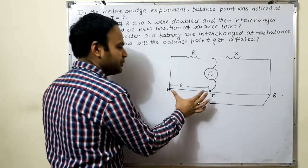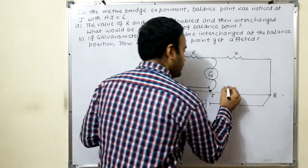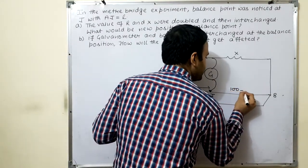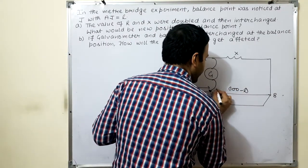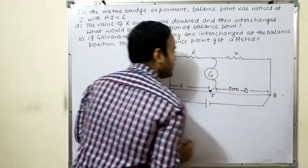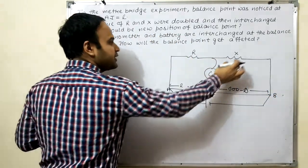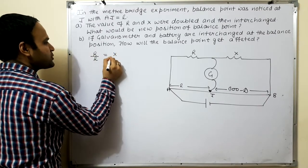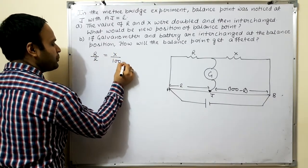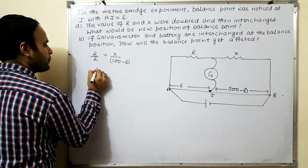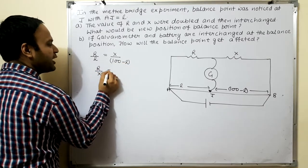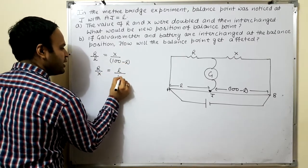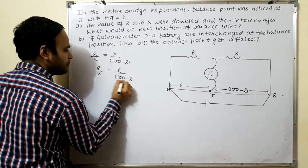If you see, this is 100 cm. First, if L is L, then this remains 100 minus L. Then, this upon this equal to this upon this means R by L equal to X by 100 minus L. So, R by X value is L by 100 minus L. Clear?